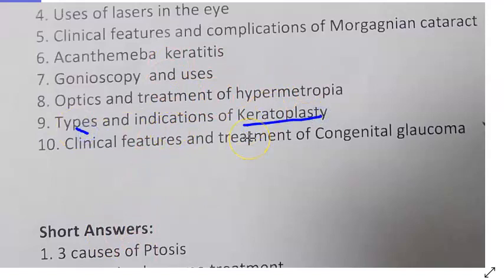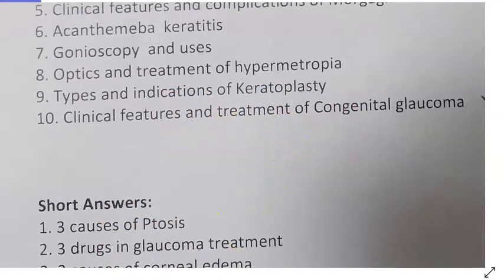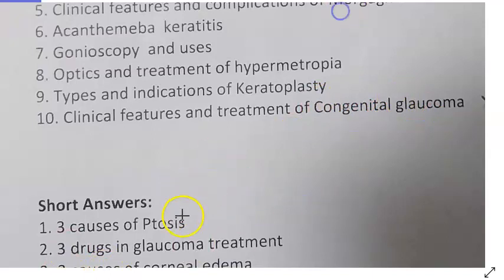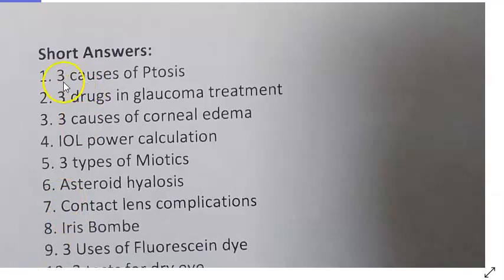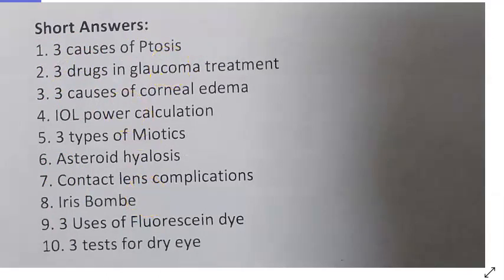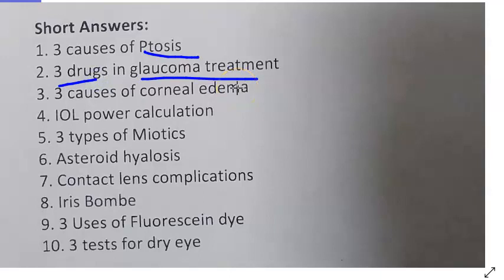Keratoplasty — types and indications: penetrating keratoplasty, lamellar, deep anterior lamellar, and endothelial keratoplasty. Indications include optical, therapeutic, and cosmetic. Congenital glaucoma (buphthalmos) — treatment involves gonioscopy and goniotomy. Three causes of ptosis: mechanical (e.g., chalazion) and other causes.